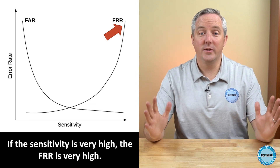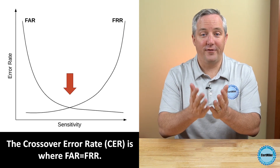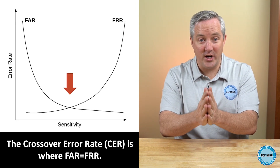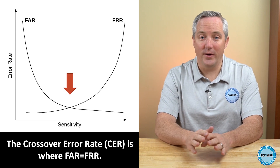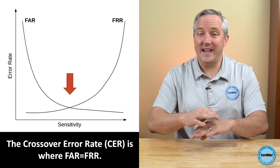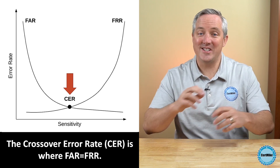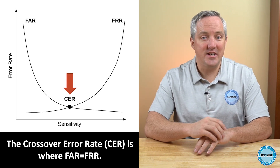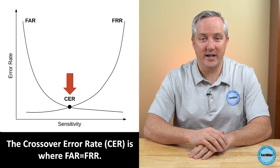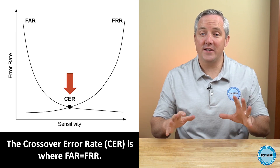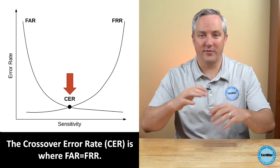What we do is adjust the sensitivity of the system until we find the point where the false acceptance rate and false rejection rate are equal to each other. This balancing point is something that can't be gamed, and it's called the crossover error rate, or CER. That CER is the best way to measure the effectiveness of a biometric authentication system because it provides us with a fair way to compare the effectiveness of different systems.